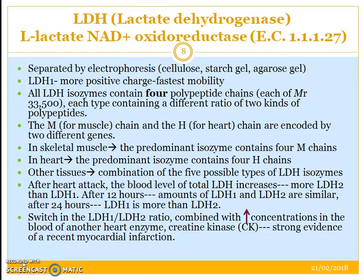In skeletal muscle, the predominant isozyme contains 4 M chains, whereas in the heart, the predominant isozyme contains 4 H chains. In other tissues, there is a combination of all 5 possible types.